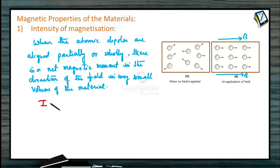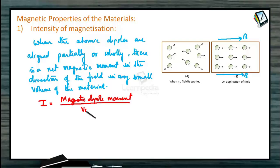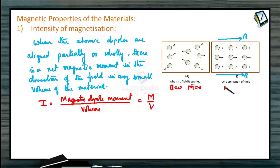The intensity of magnetization is equal to the ratio of magnetic dipole moment to that of volume — that is, how many magnetic dipole moments are there per unit volume, given by M divided by V. When B equals zero, there is no magnetic moment; when B is not equal to zero, magnetic moment is also not equal to zero. The unit of magnetization is ampere per meter.